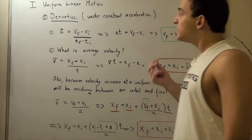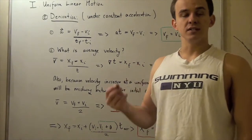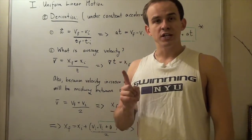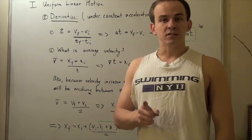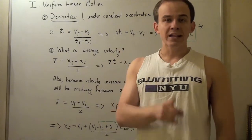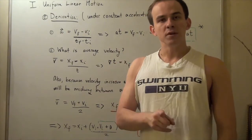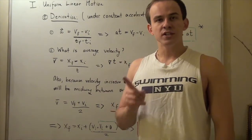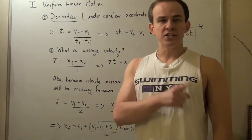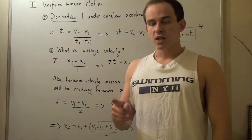Let's begin by defining what acceleration is. Acceleration is a vector, so it has both magnitude as well as direction. The formula for acceleration is change in velocity divided by change in time.